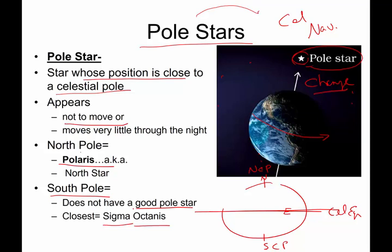Currently, Polaris is our pole star, but many years back it was another star called Vega. 10,000 years ago we had a different pole star, and 10,000 years in the future we probably will have another one again.